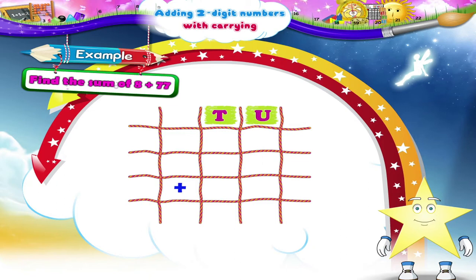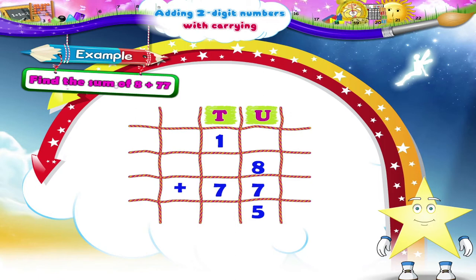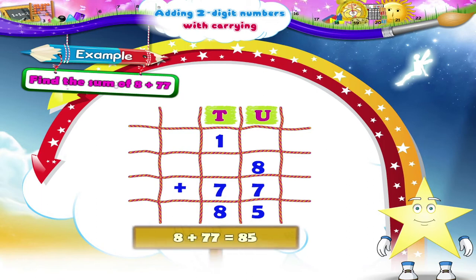Find the sum of eight plus seventy-seven. Let us add the digits in the units place first. Eight units plus seven units equals fifteen units. Carry over one to the tens column and write five in the units place of the answer. Now Starry, add the tens. Yes, seven plus one gives eight tens. So eight plus seventy-seven equals eighty-five.